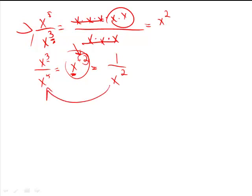And so if you think about it, going back to x cubed over x to the fifth, when we write the three x's on the top, we have five x's on the bottom. Look what happens. Three cancel out, three cancel out, leaving me a one.